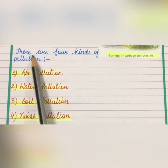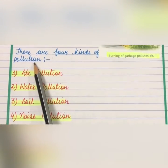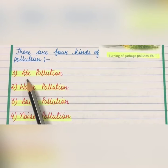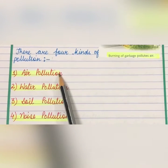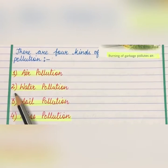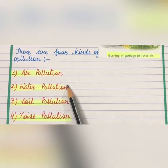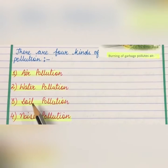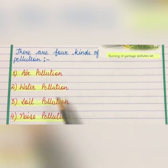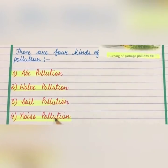There are four kinds of pollution. Number one is air pollution, second is water pollution, third is soil pollution, and fourth is noise pollution.